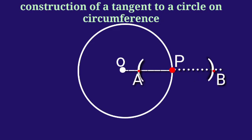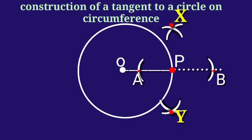Draw the perpendicular bisector of AB and name it XY. As shown in the figure, XY is the required tangent to the given circle passing through P.